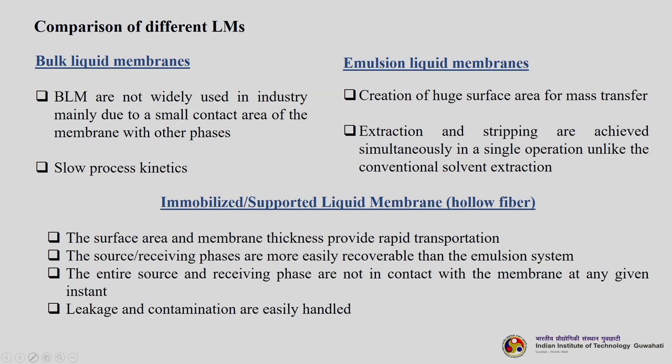Comparing the three types: BLM is not widely used in industry mainly due to small contact area and very slow process kinetics. ELM has a huge surface area for mass transfer — its biggest advantage — and extraction and stripping are achieved simultaneously in a single step. In immobilized and supported liquid membrane systems including hollow fibre, the surface area and membrane thickness provide rapid transportation. The source and receiving phases are more easily recoverable than in the emulsion system, and leakage and contamination are more easily handled.